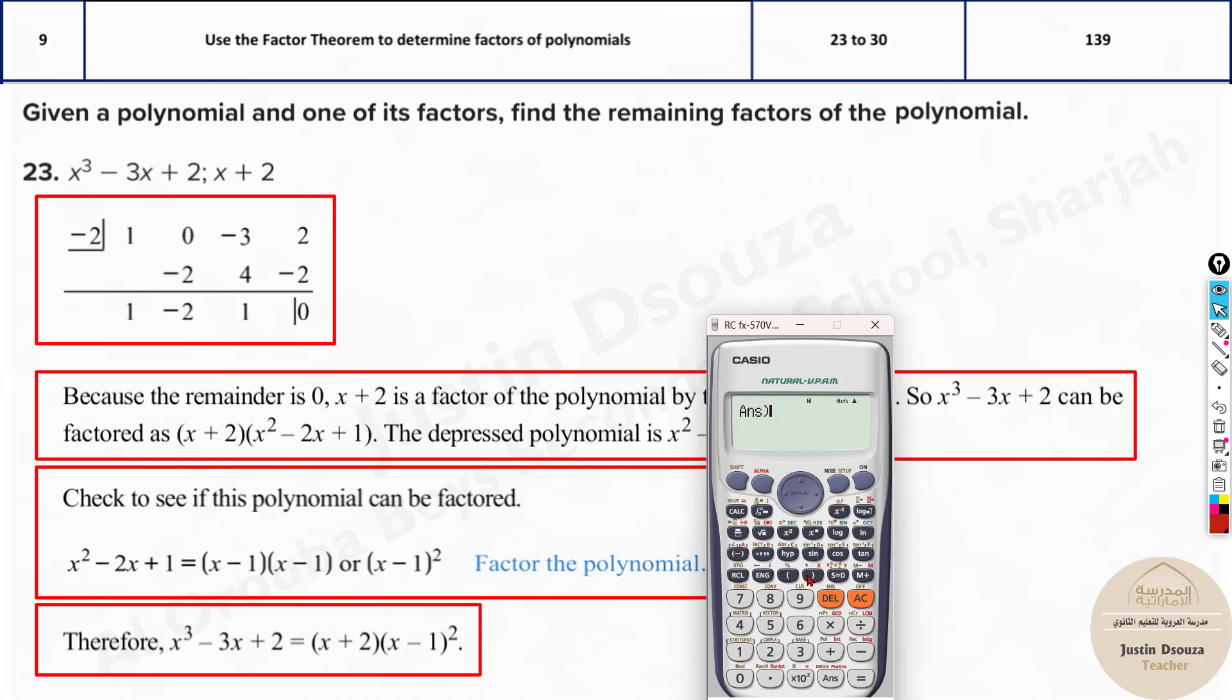Now, this one, all the four options need to be put in the calculator. So I'll put this first one over here. It will be (x + 2), close the bracket, open the bracket again, (x - 1), close the bracket and square it up. Where do you want to calculate? At the same point. Is it same? Yes.